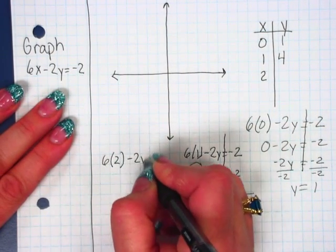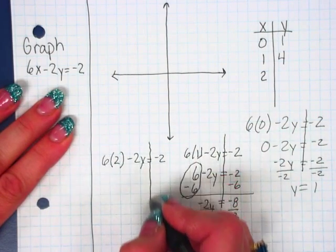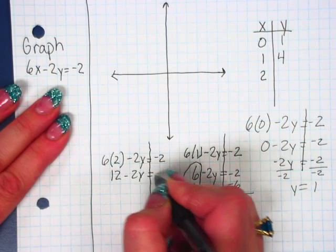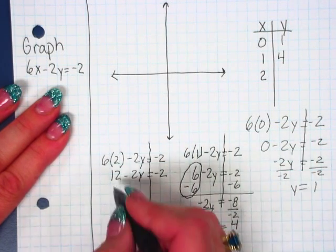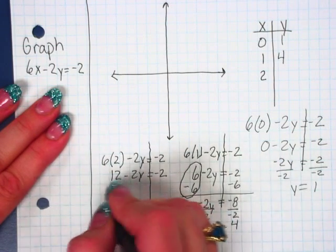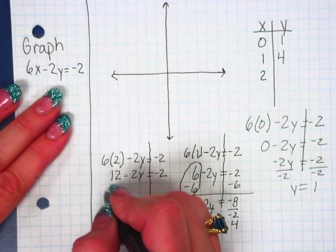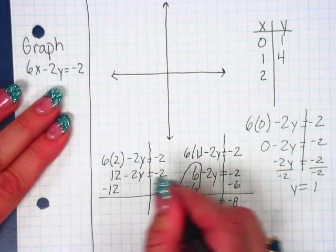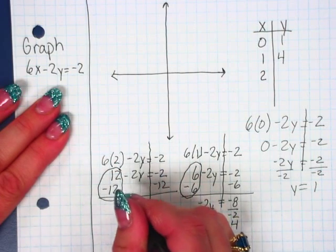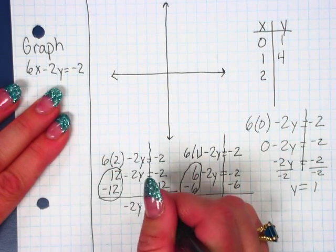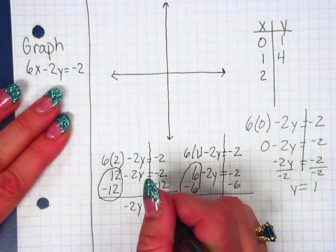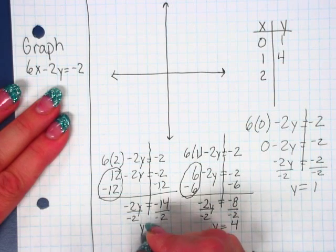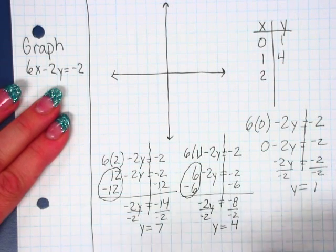Now what happens if x is 2? So we're doing a lot of substitution here. Practicing our substitution over and over again. 12 minus 2y equals negative 2. Solving for the y. Get rid of that 12 and the negative 2. Adding and subtracting first. It's a positive 12. 12 minus 12 does give me a 0. Minus 2y. And negative 2 minus 12 is negative 14. Divide by negative 2. y equals 7.